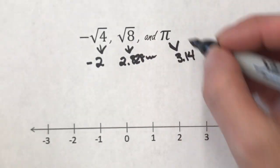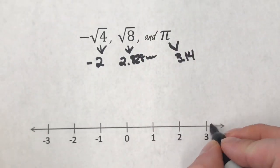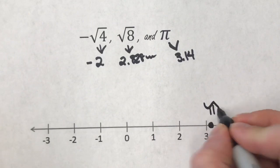So pi, looking at that one first, is a little bit over 3, so I'll put pi right there, a little bit over 3.